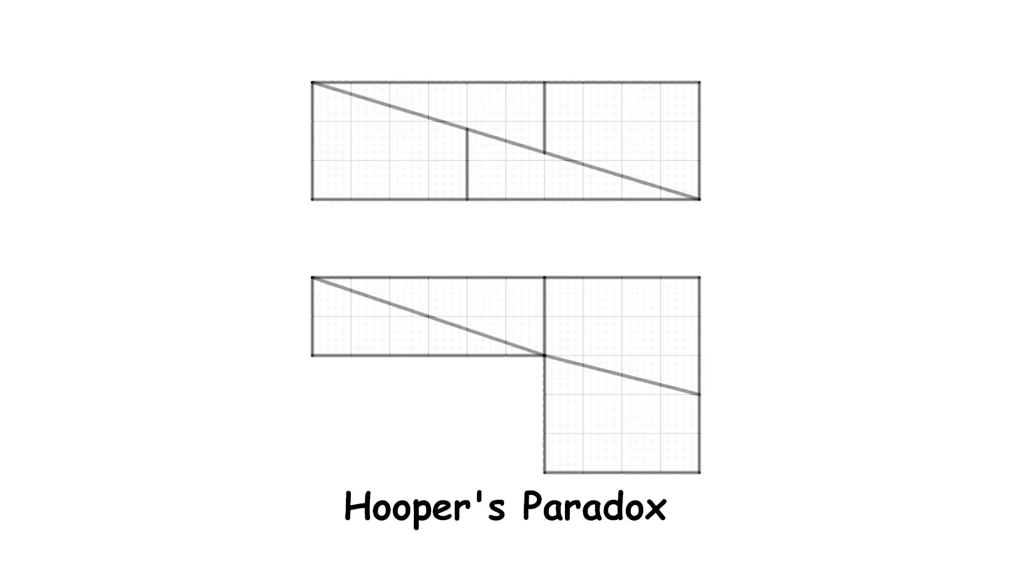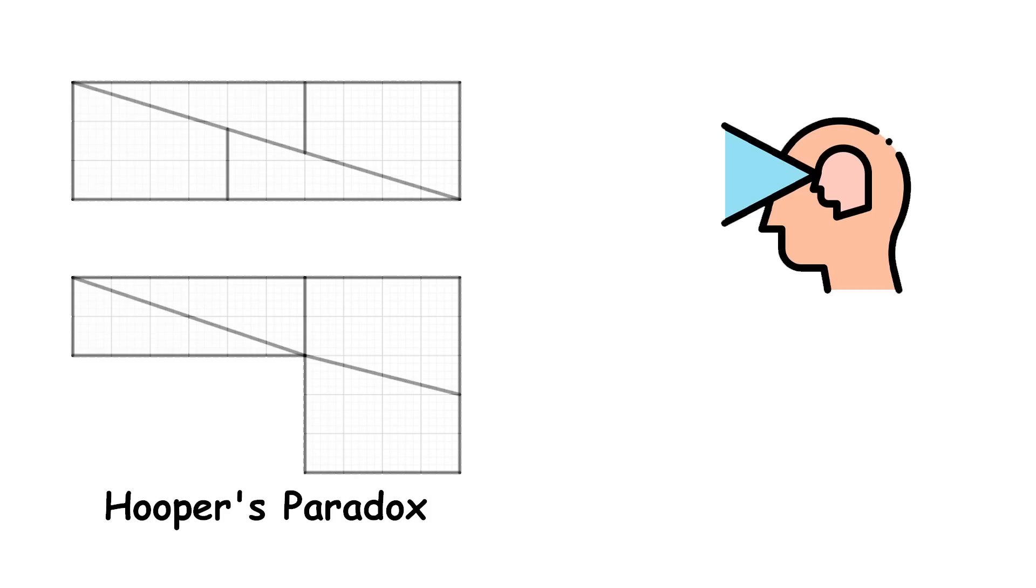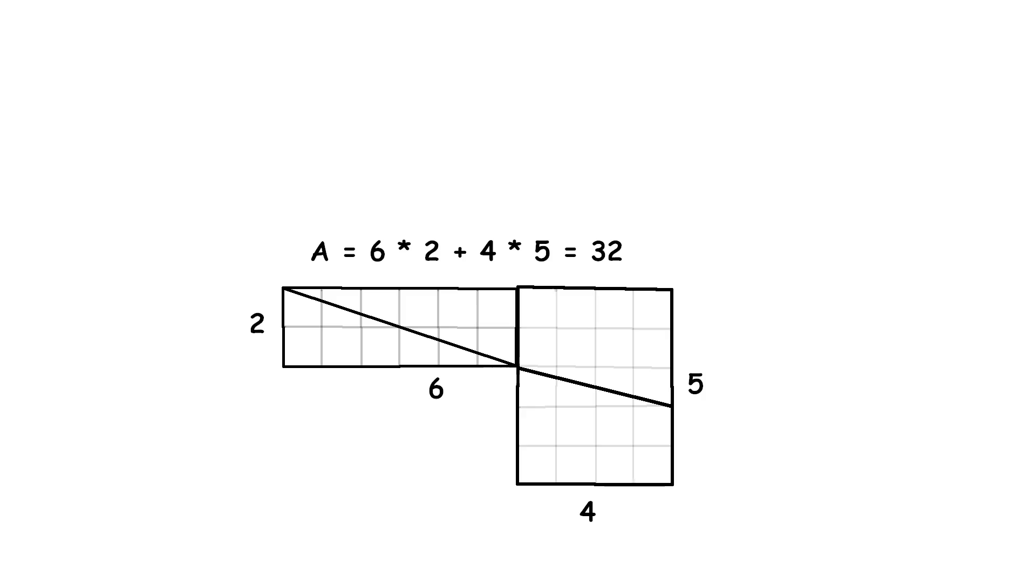Hooper's Paradox. Hooper's Paradox is a fascinating puzzle that plays a trick on our perception of area. Imagine you have a geometric shape with a total of 32 square units. This could be any shape, but for simplicity, let's say it's a combination of triangles and other shapes that together make up this area.